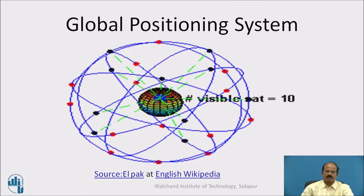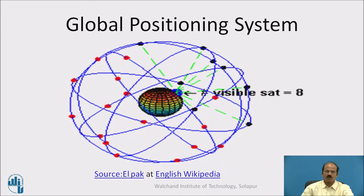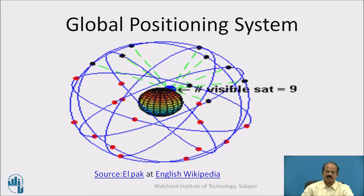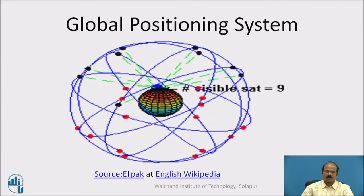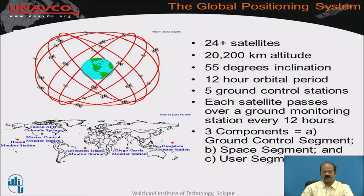This is a wonderful picture of how the Global Positioning System works. The conventional NAV star used to have around 24 satellites placed in a systematic manner in space. The orbits of various satellites are beautifully displayed in this picture. The total satellites were 24 plus, the distance from earth was around 20,200 kilometers, inclination was 55 degrees, and the orbital period of each satellite was 12 hours. There were five ground control stations to enable data exchange, and each satellite passes over a ground monitoring station every 12 hours.